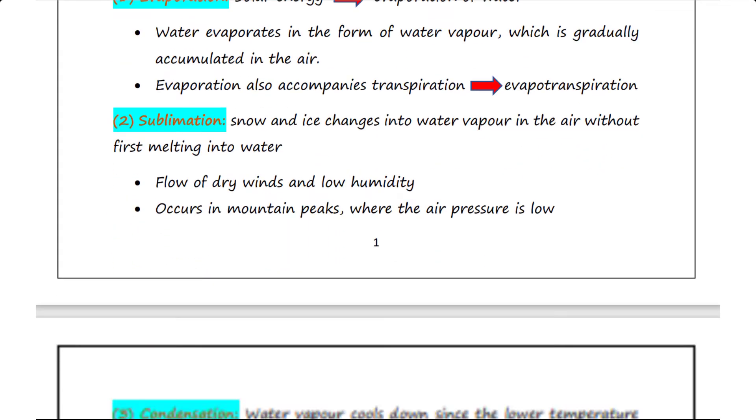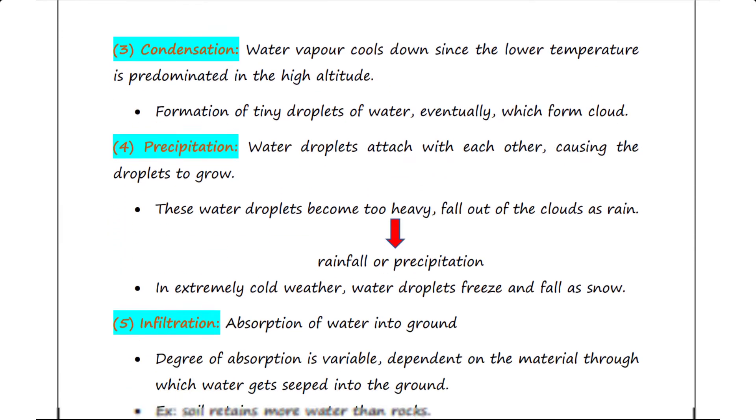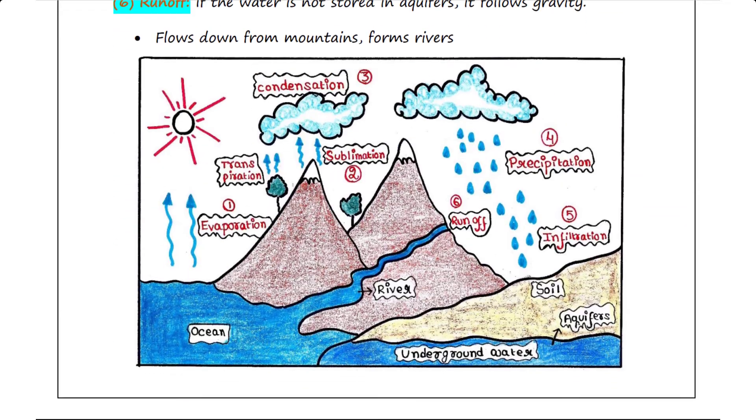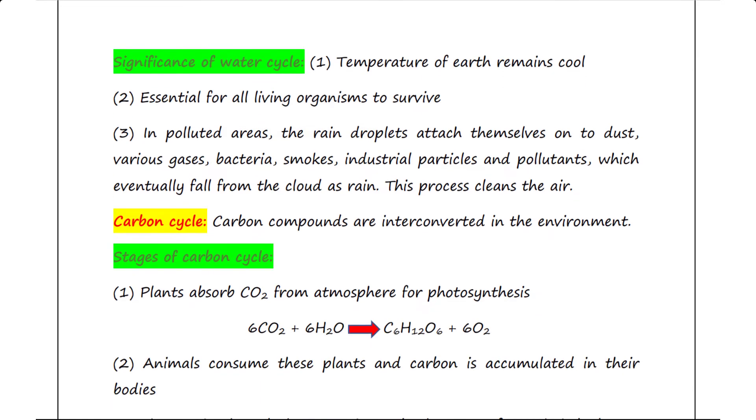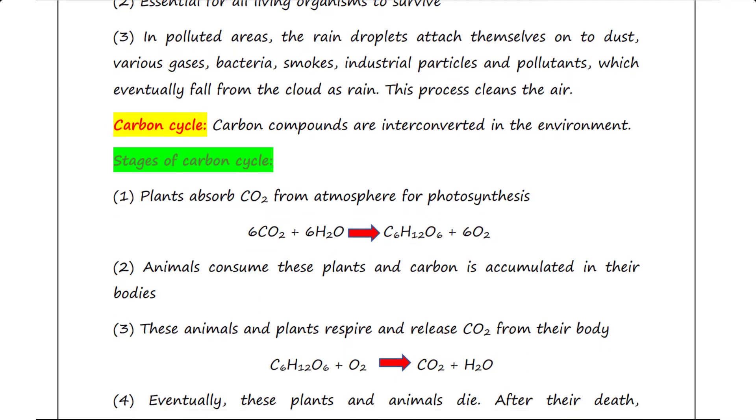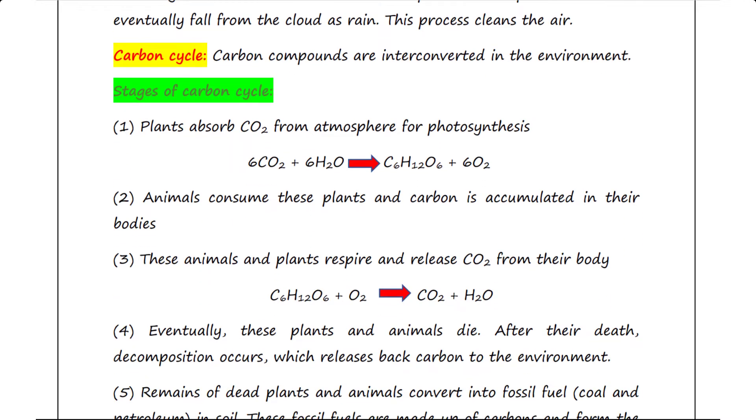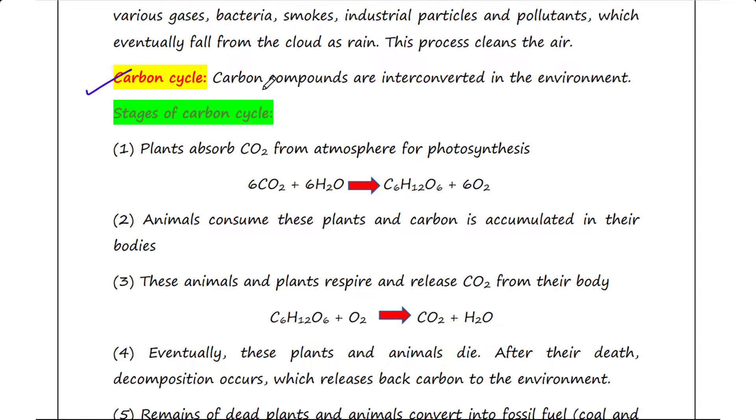In the last lecture, we talked about the water cycle or hydrological cycle. In today's lecture, we will talk about the carbon cycle. If you want to check the last lecture, the link is in the description box. The carbon cycle is the process where carbon compounds are interconverted in the environment.